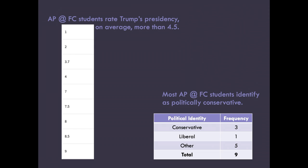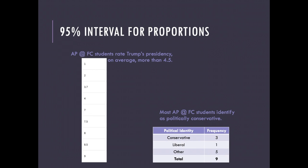I want you to take that data and construct a 95% confidence interval for proportions. You determine which of these two data sets is the appropriate one for proportions, and then determine how to construct the interval. We're just looking for the actual interval here — the 95% confidence interval. I'm going to show the pause button now, and you have the option to pause and actually construct this interval before I go over the answer.